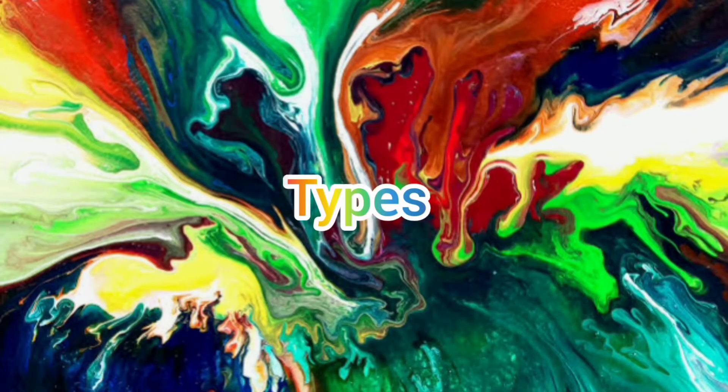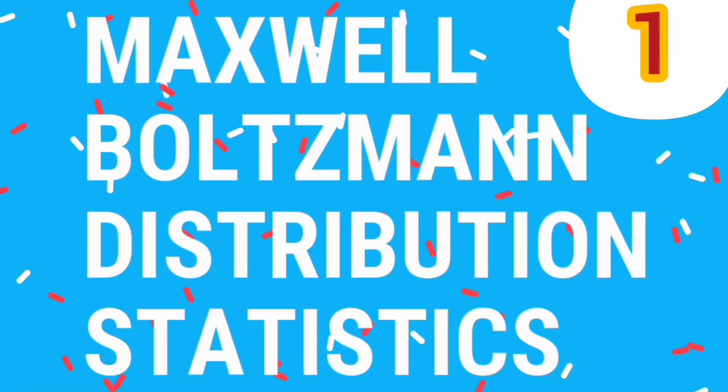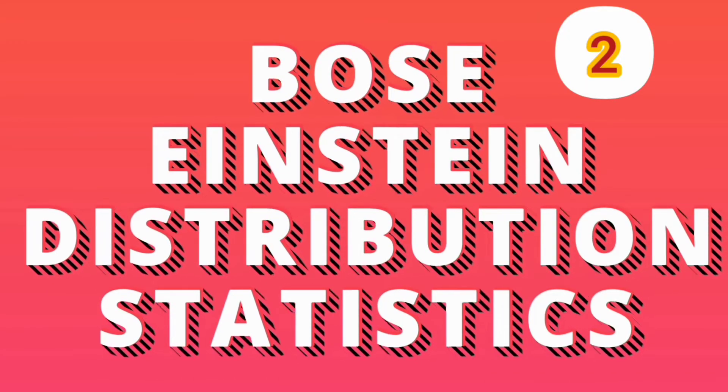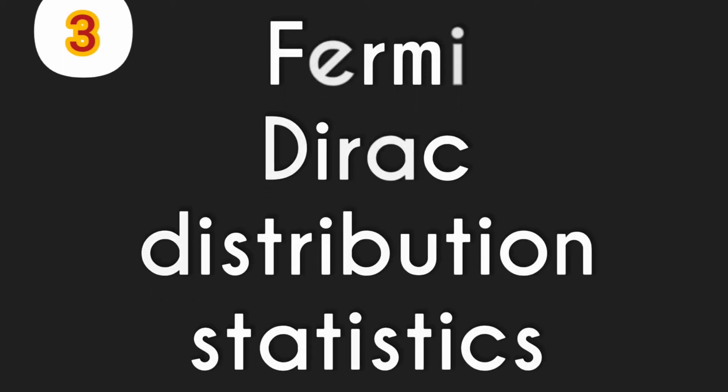We can find the distribution in statistical mechanics. We can easily define the whole system in a given energy state. So there are different types. What are the types? 1. Maxwell-Boltzmann Distribution Statistics. 2. Bose-Einstein Distribution Statistics. 3. Fermi-Dirac Distribution Statistics. So there are 3 statistics.